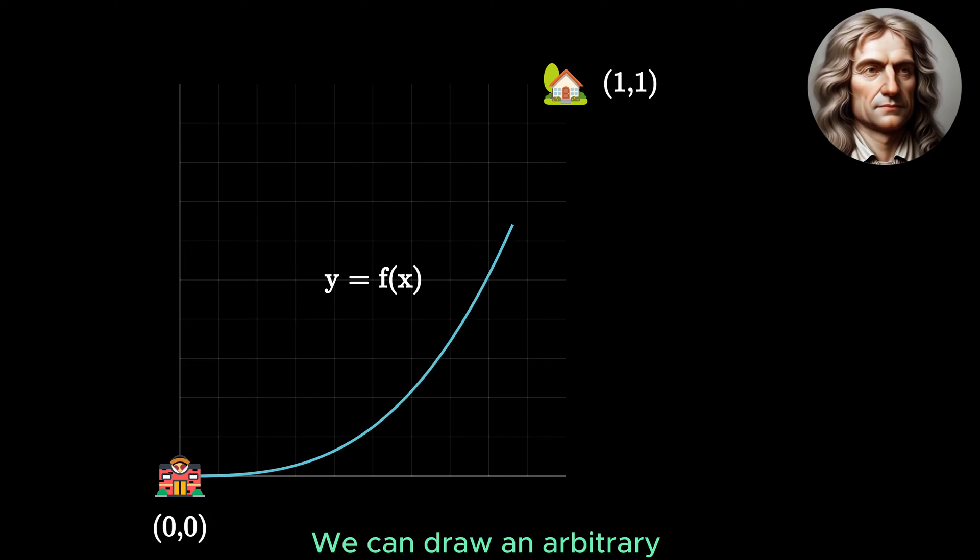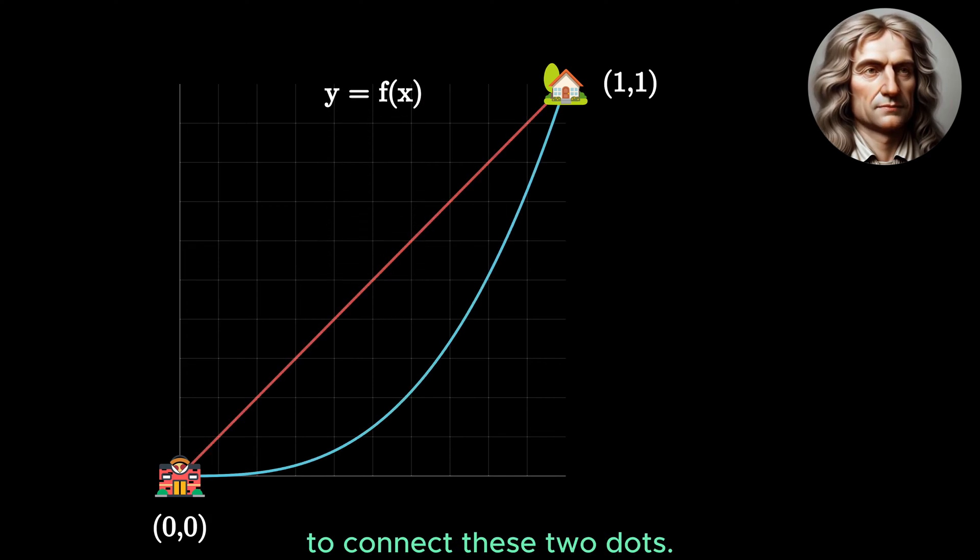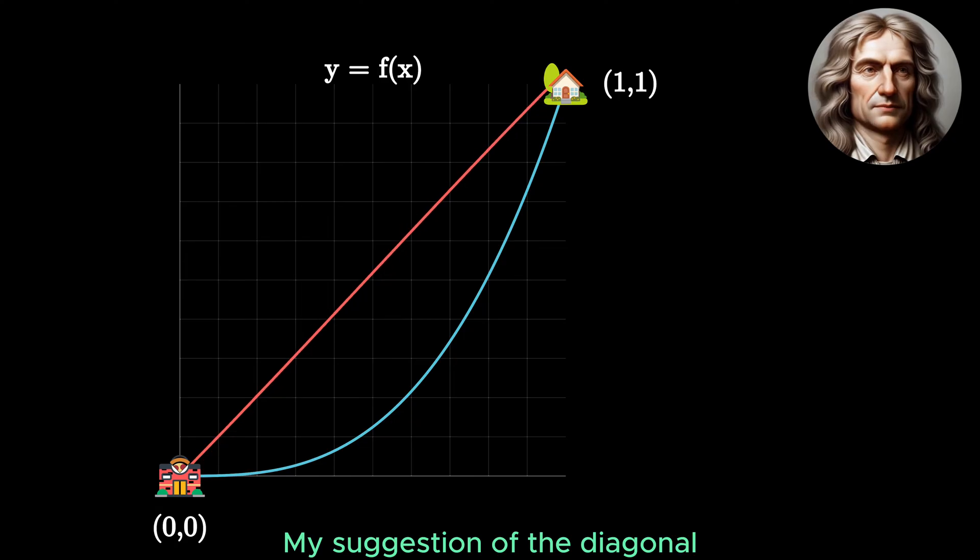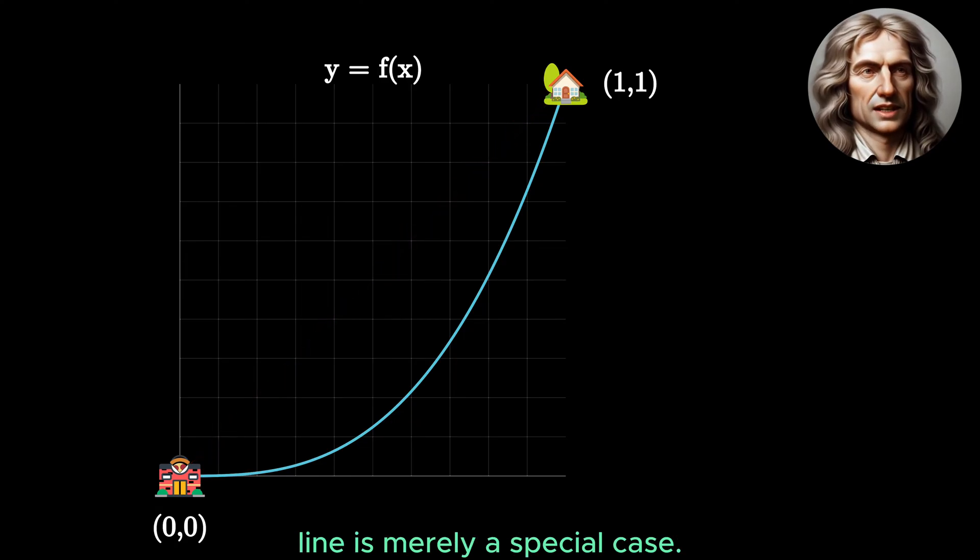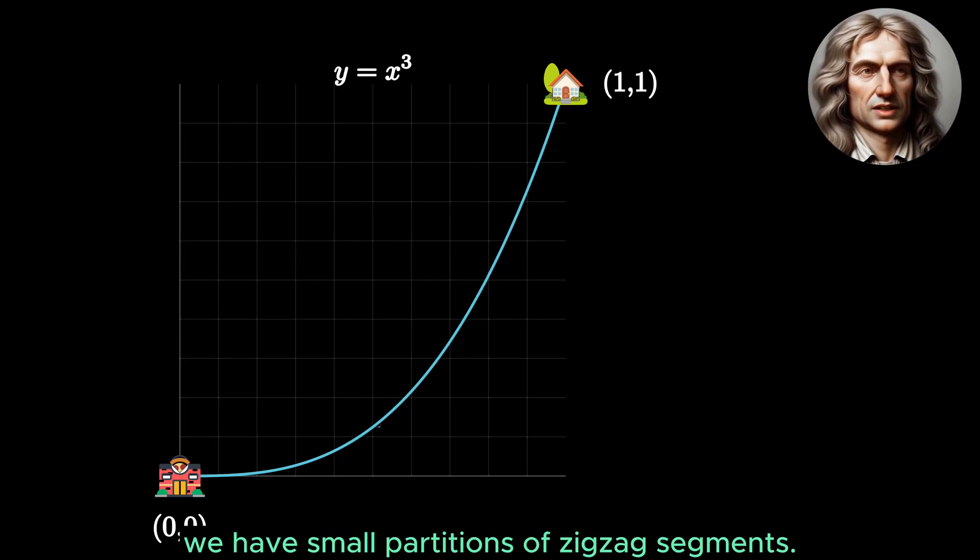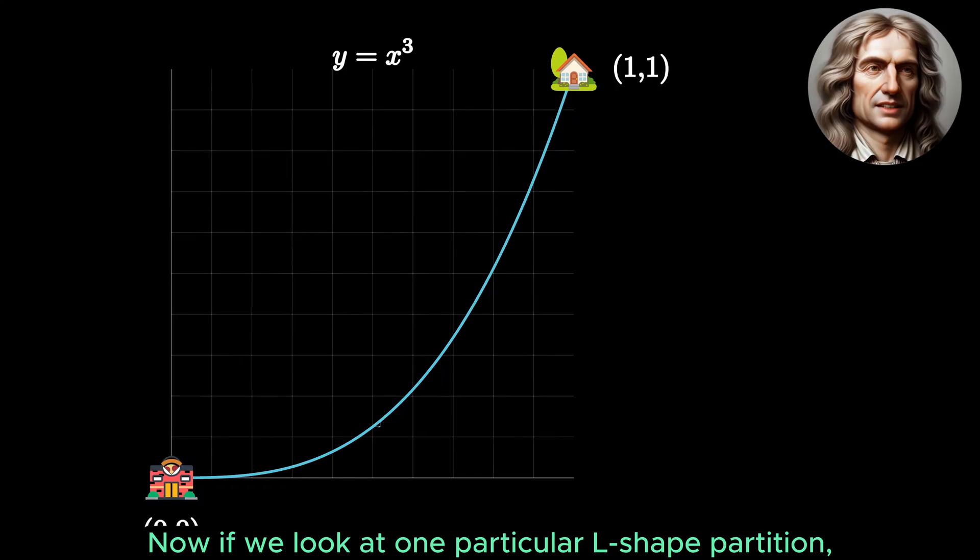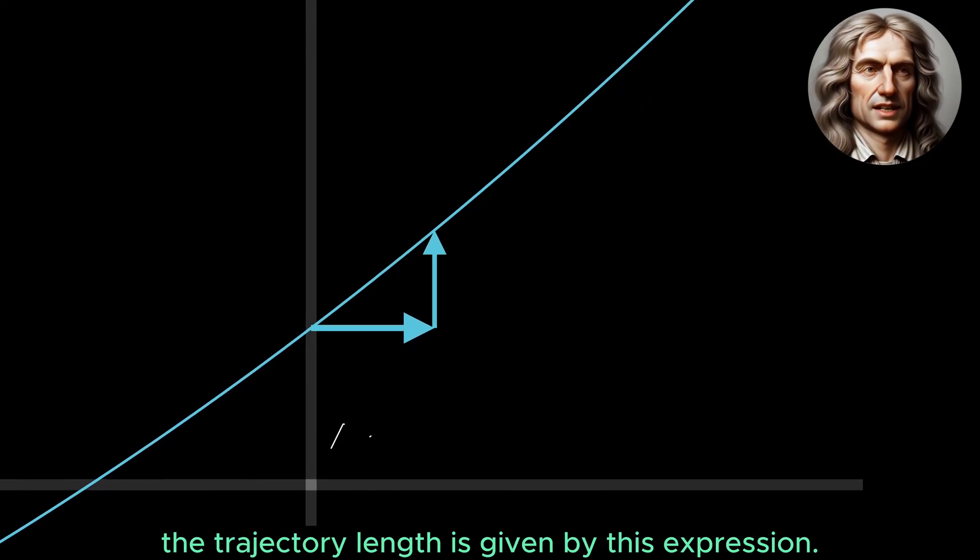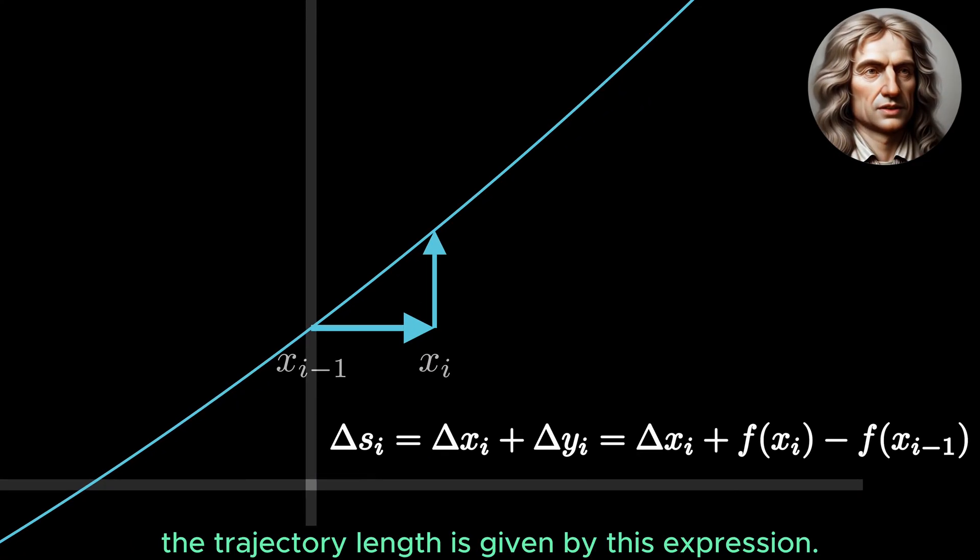We can draw an arbitrary non-decreasing function f(x) to connect these two dots. My suggestion of the diagonal line is merely a special case. Following my sincere suggestion to Mr. Leibniz, we have small partitions of zigzag segments. Now, if we look at one particular L-shaped partition, the trajectory length is given by this expression.